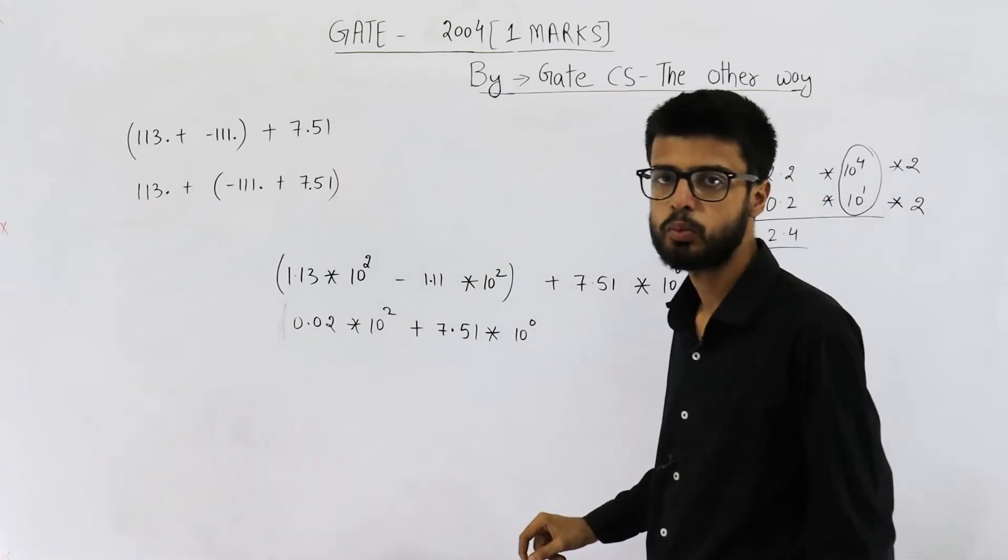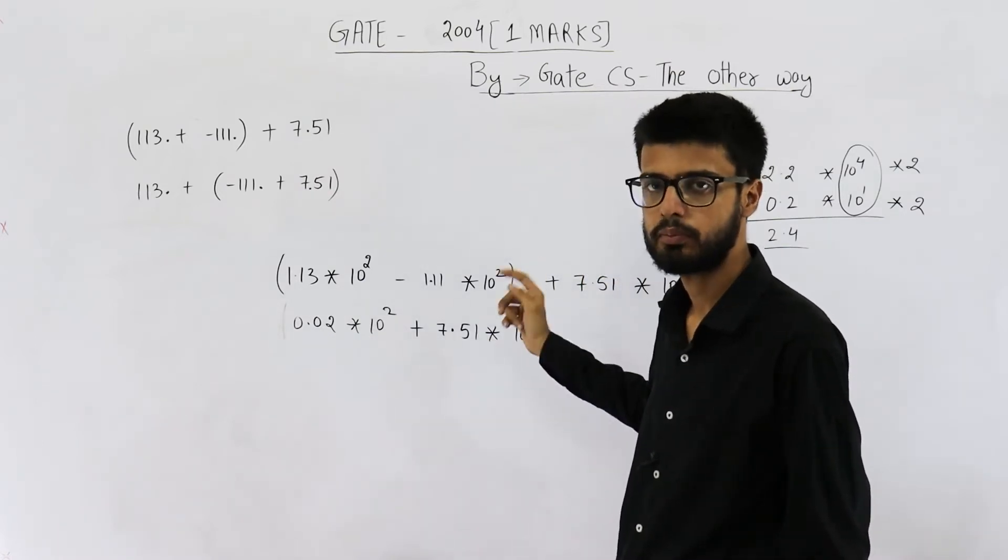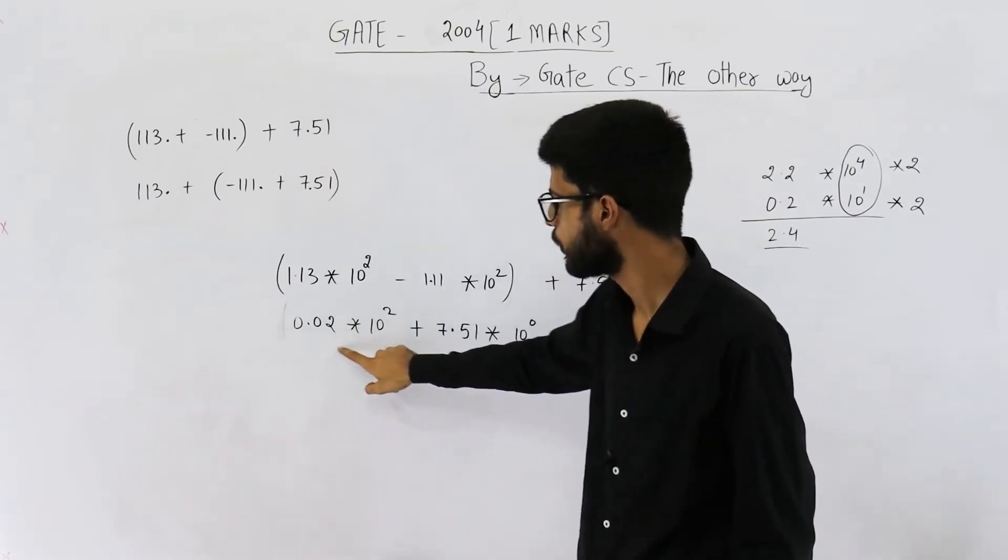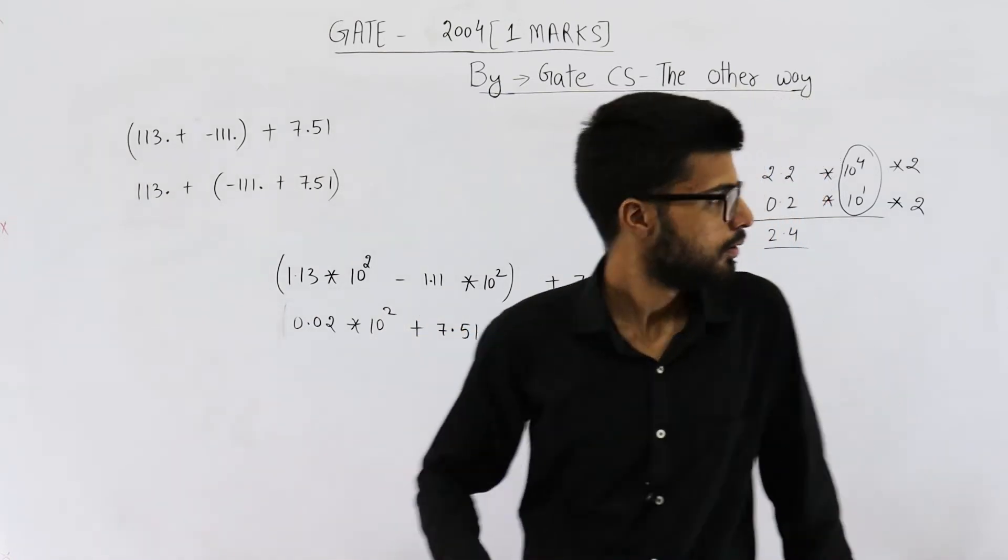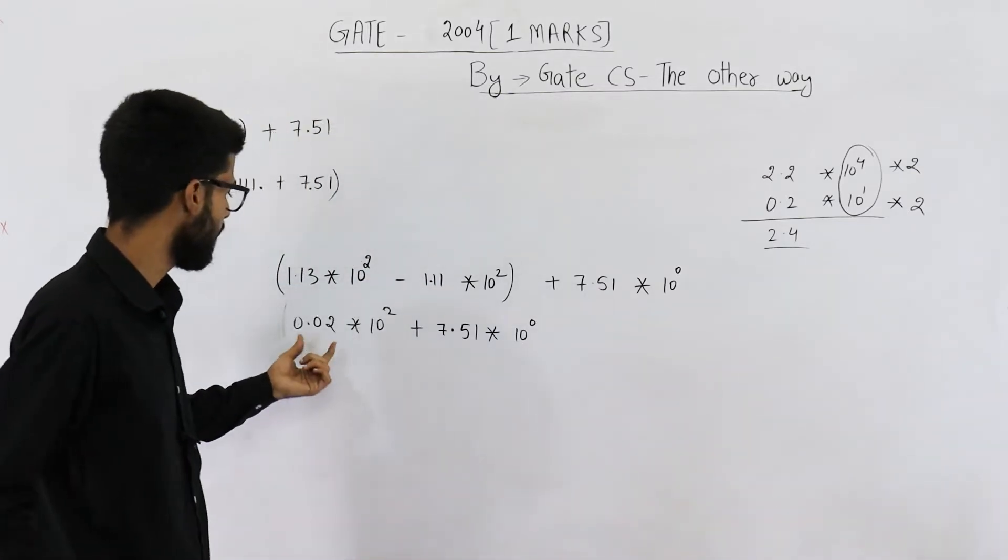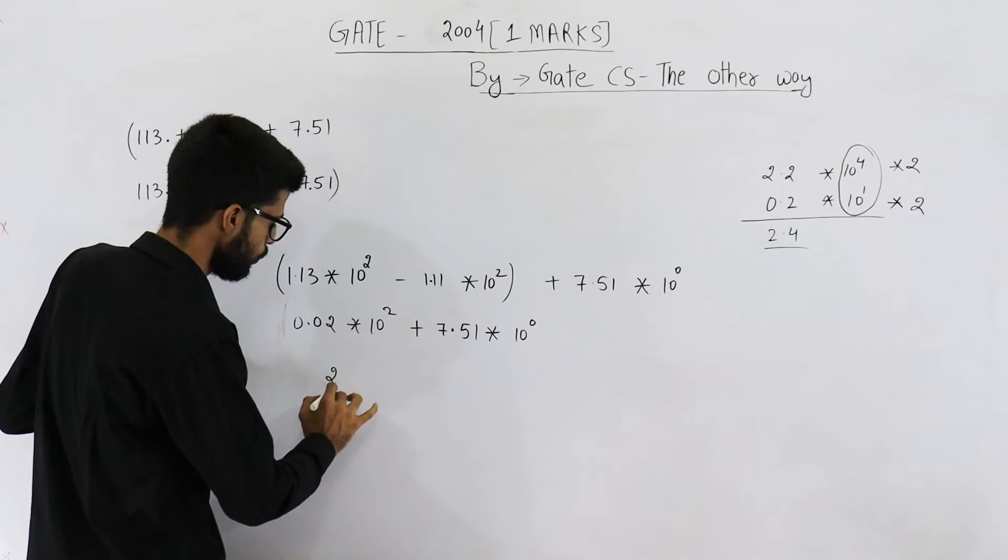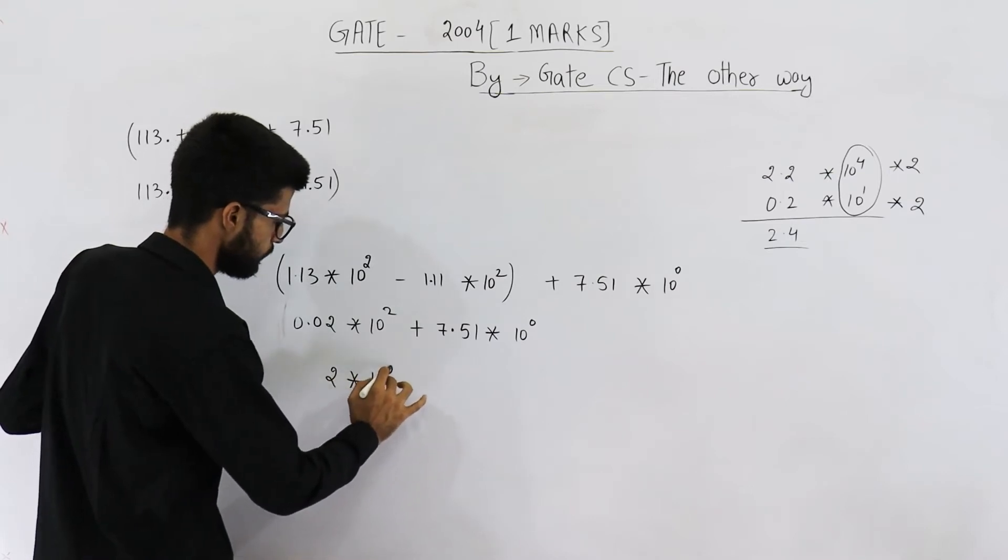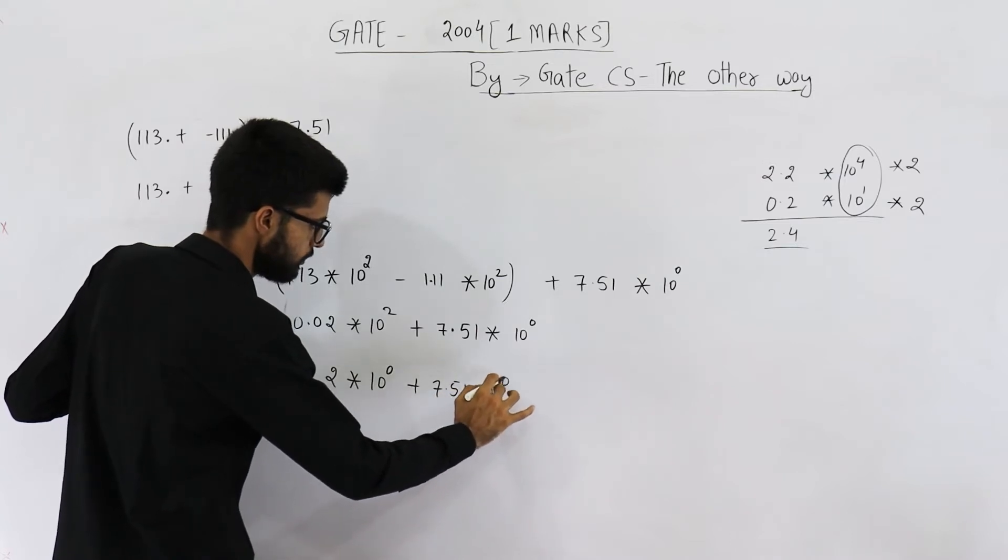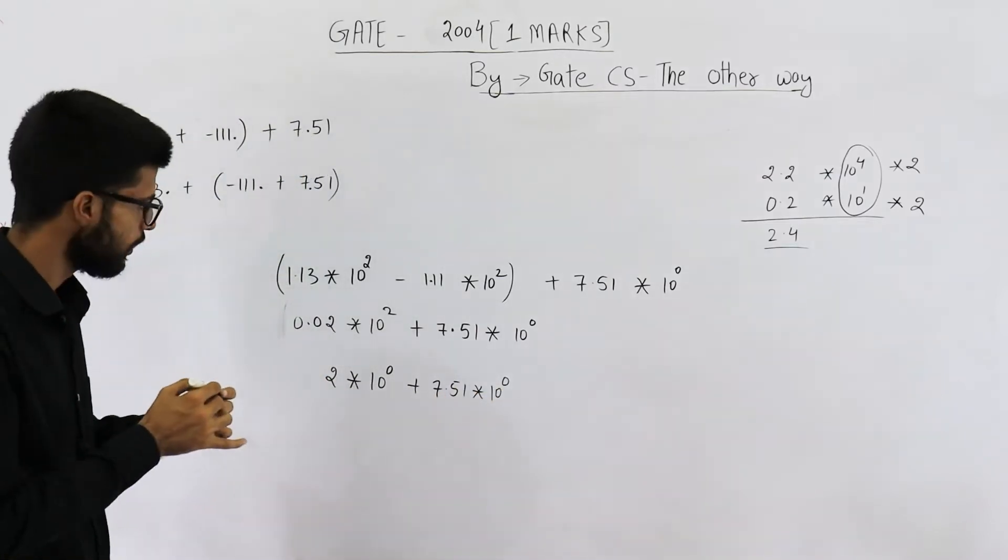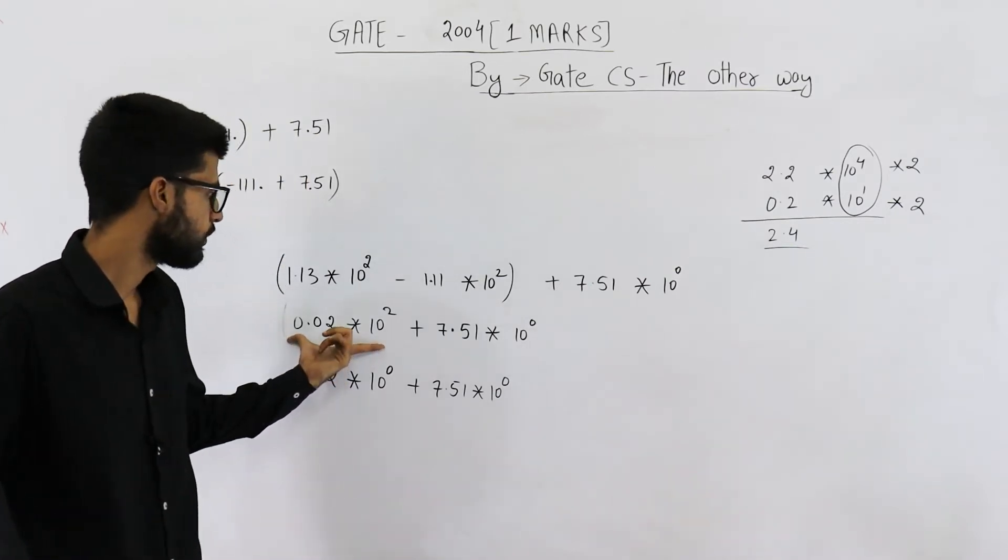Which one is the smaller number? This, because this number is 2, this number is 7 point something. So this is the smaller number. Take its exponent, make it equal to 0. Now if you want to make exponent of this number 0, you will write 2 × 10⁰. Here it will be 7.51 × 10⁰. See, whatever is actually saved in registers or in memory is this only. This one is only a temporary value that is generated for the purpose of addition.